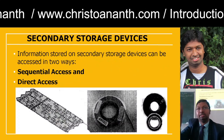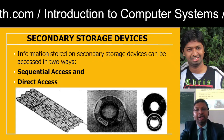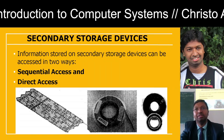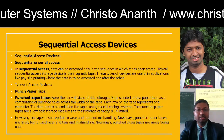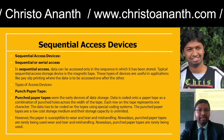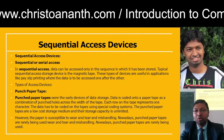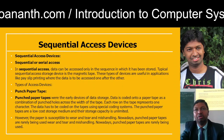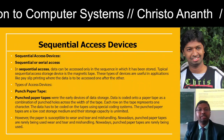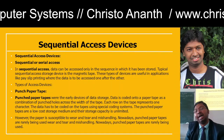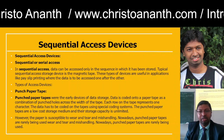Secondary storage devices include sequential access and direct access types. Magnetic tapes are sequential access devices. In sequential access, data can be accessed only in the sequence it is stored — for example, 1, 2, 3, 4 in that order.